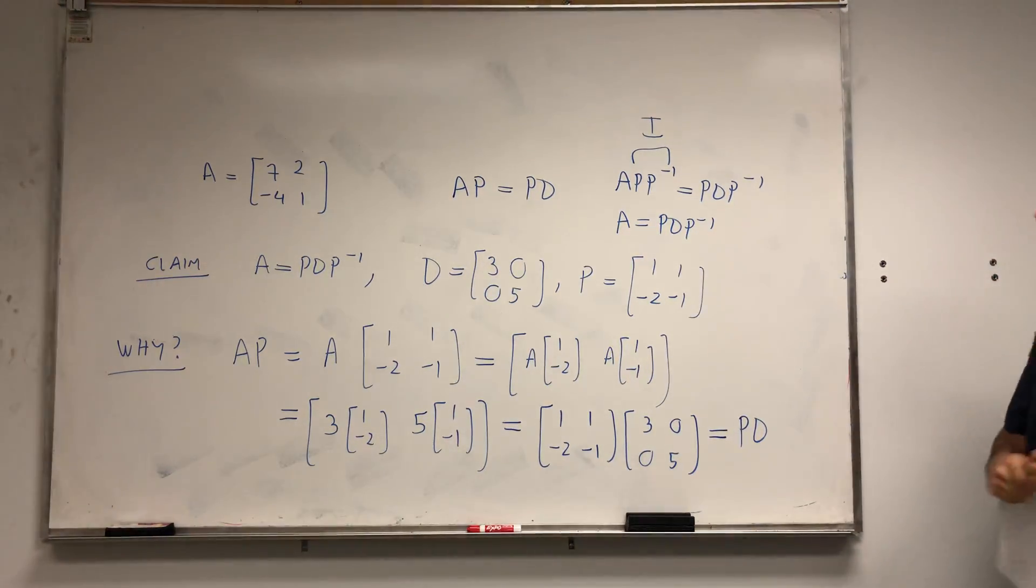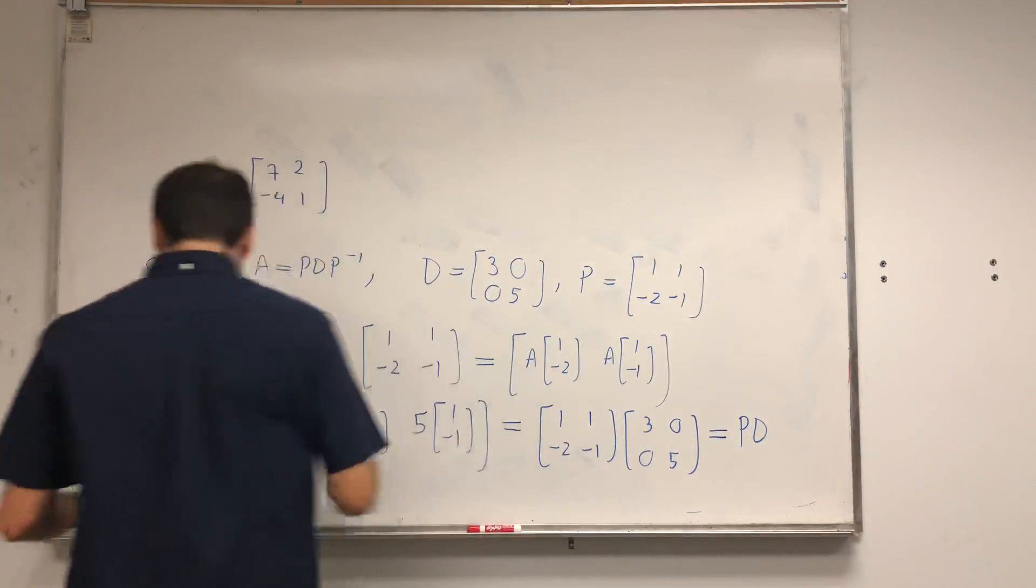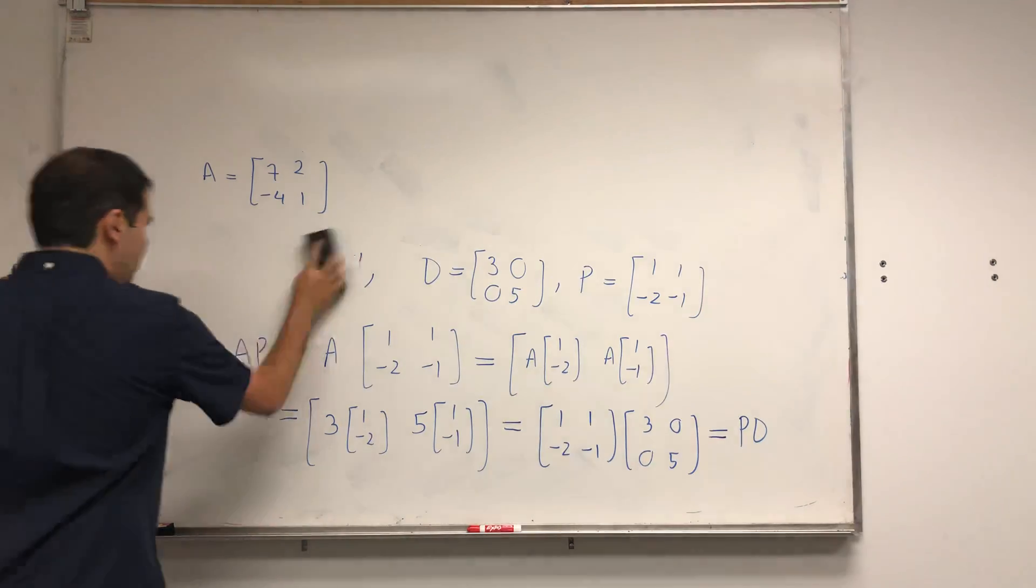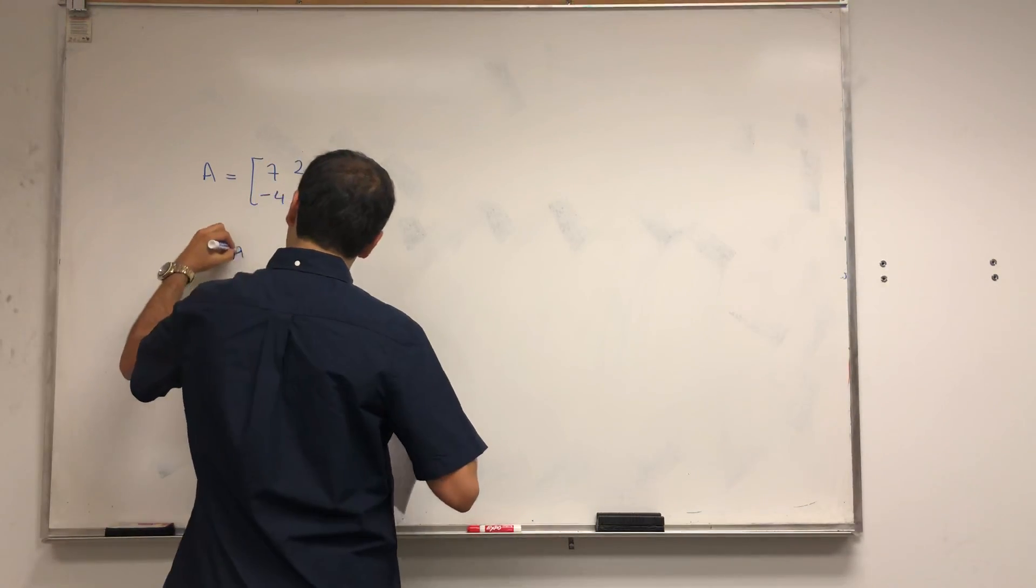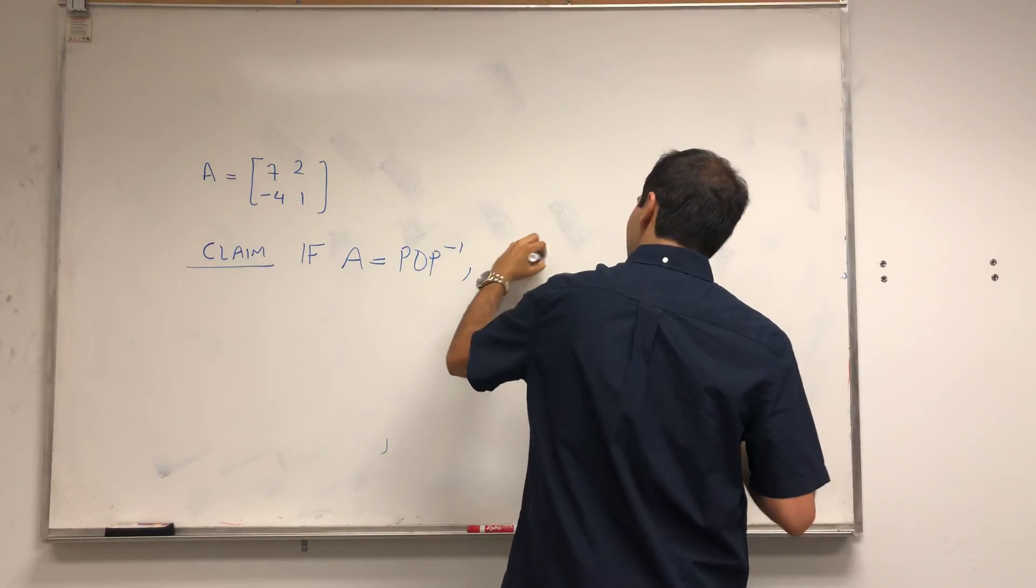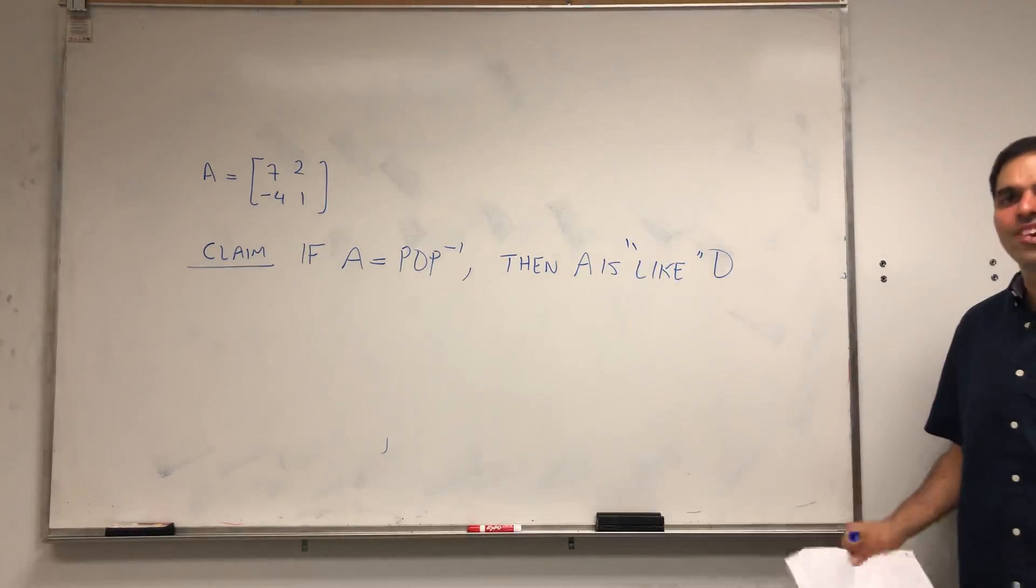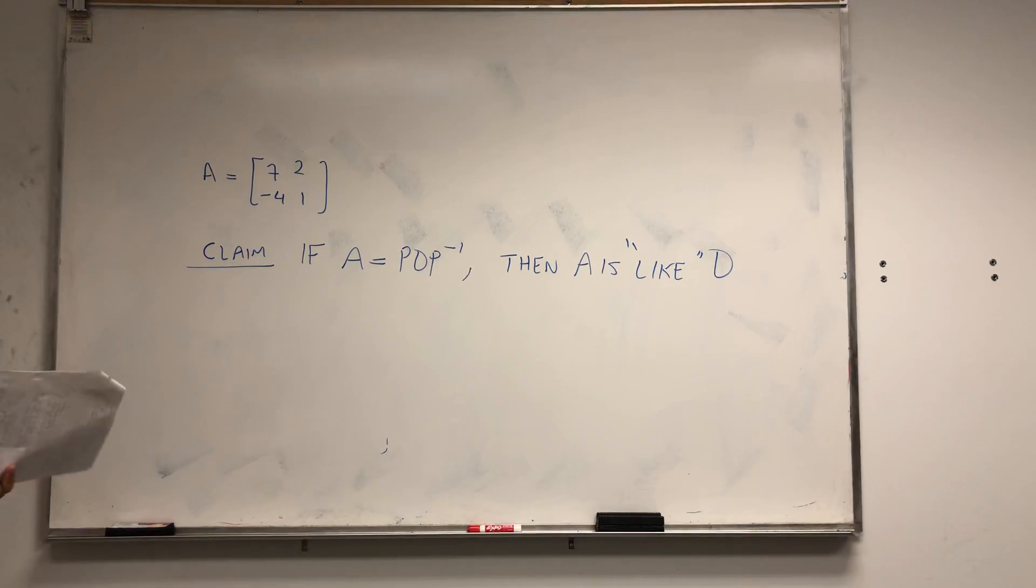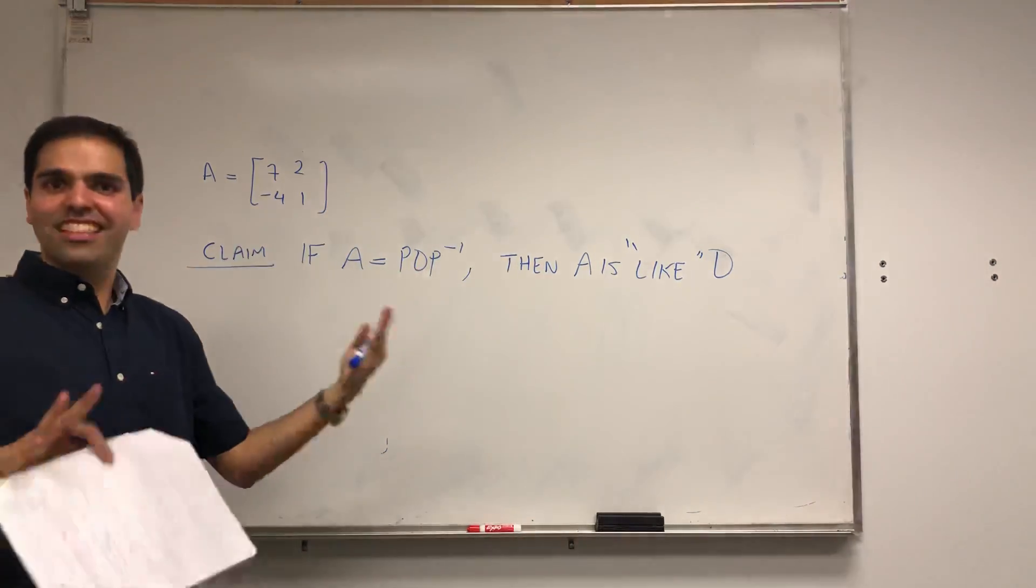So this is why when we diagonalize we have PDP inverse. And now I'm almost there to the analogy, but let me explain something. I'm claiming that if A equals PDP inverse, then A is like D. Or in math terms, you call it similar. A is similar to D. And let me first explain it to you with a diagram. But by the way, this is why it's called diagonalization, because we're essentially saying that A is like a diagonal matrix.